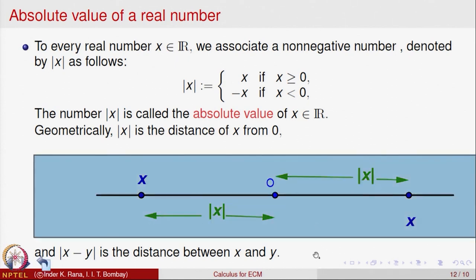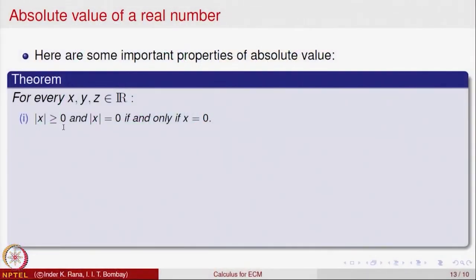This notion of absolute value has some important properties. Let us look at those properties — we will not prove them but they are reasonably obvious. First, the absolute value of a real number is always ≥ 0, and it equals 0 if and only if x = 0. That means if x is 0, its distance from 0 is 0, and if the distance of a point from 0 is 0, then the point must be 0 itself. The second property says |x| = |-x|, which is clear from the definition since |x| is non-negative.